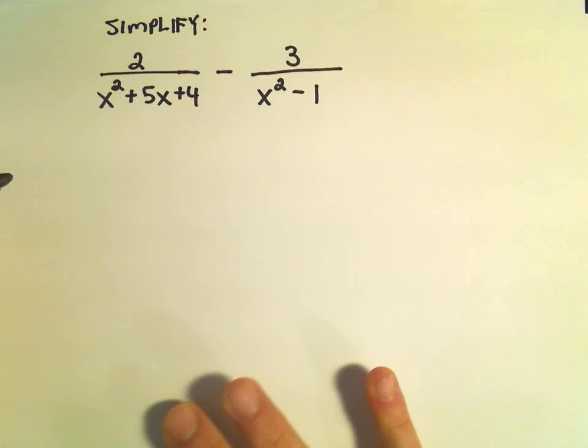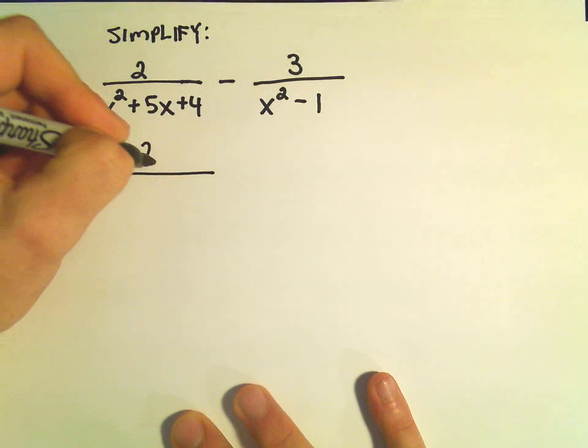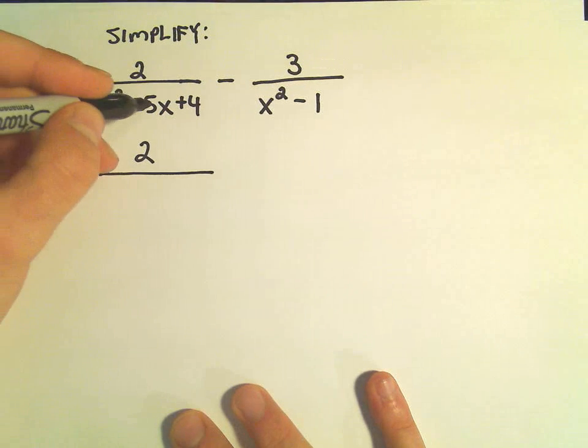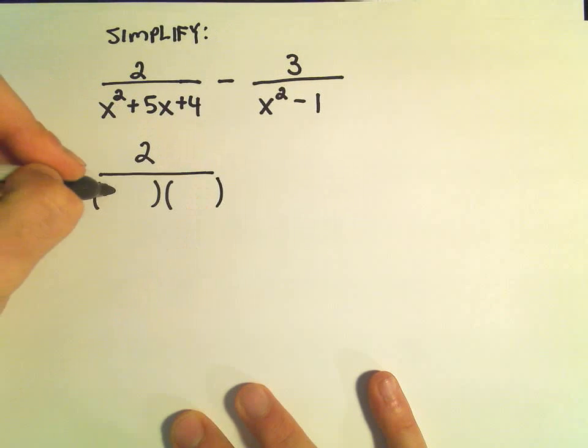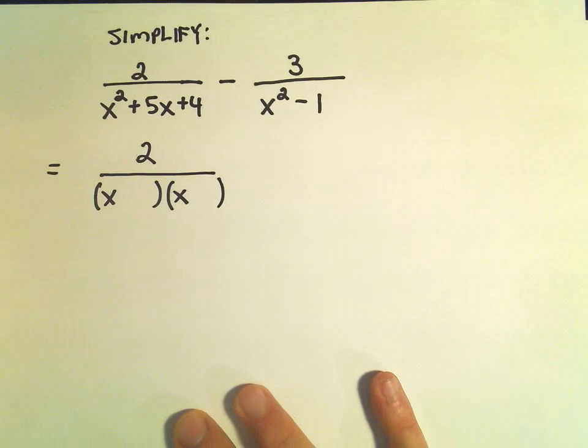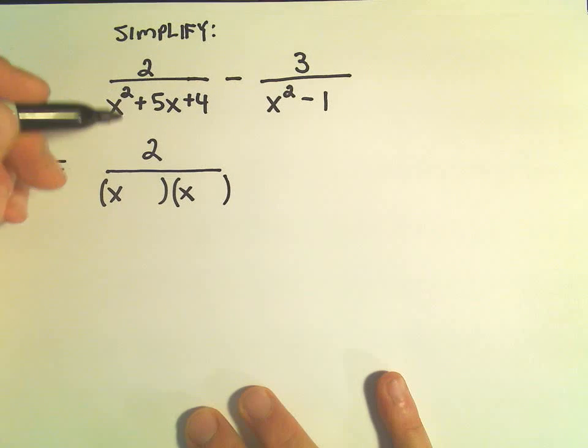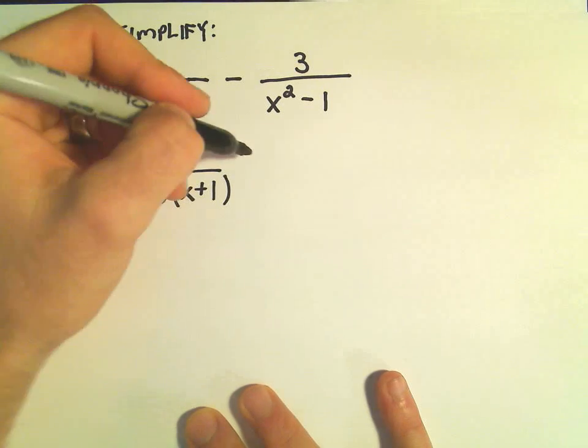So, the first thing that I do is I always try to factor the denominators if possible. x squared plus 5x plus 4. In this case I think we need an x and an x to get x squared. We need two numbers that multiply to positive 4, but add up to positive 5. I think positive 4 and positive 1 will do that.